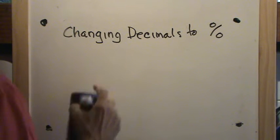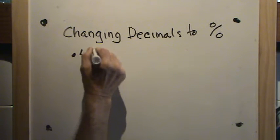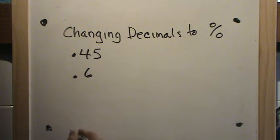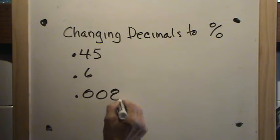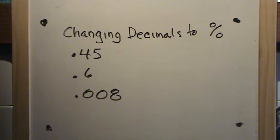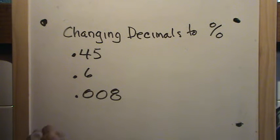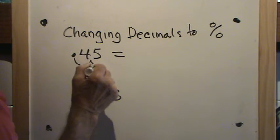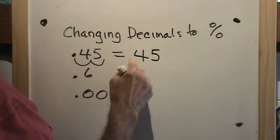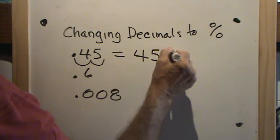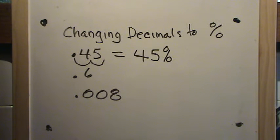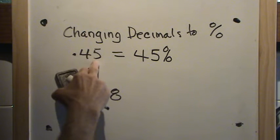I'm going to put up some problems for you to work. We'll put up forty-five hundredths, six-tenths, and eight-thousandths. Put the video on pause, work these problems, then turn it back on and we'll go over them. Welcome back. Let's take number one — forty-five hundredths. We move the decimal place two places to the right, one, two. We don't put the decimal point; we just put the percent sign. So forty-five hundredths becomes forty-five percent.